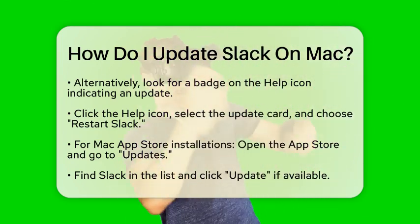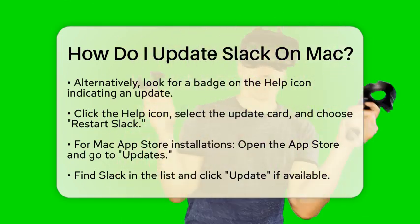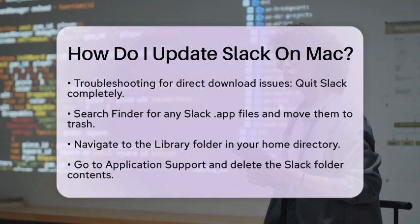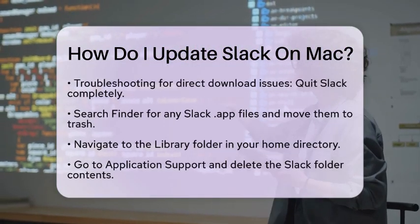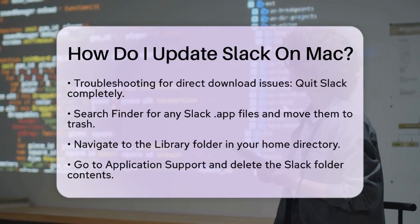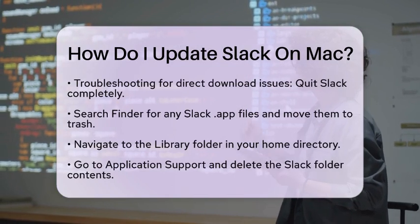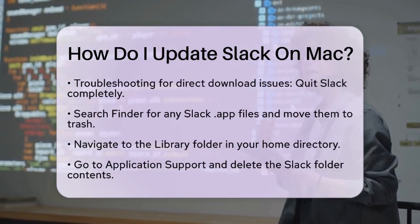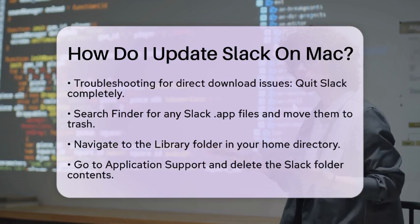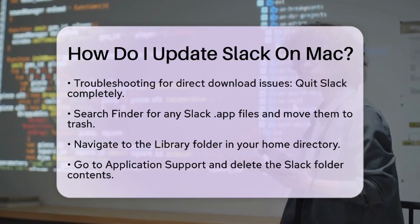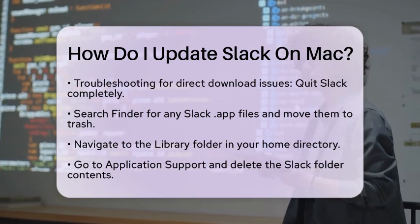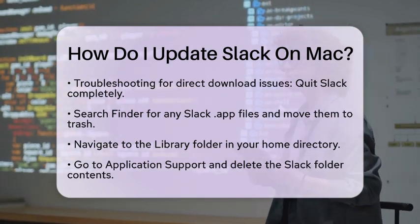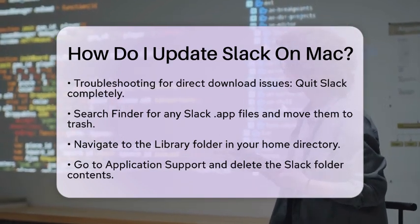Sometimes you might run into issues while updating Slack. If you see error messages or if the app remains on an older version, here are some troubleshooting steps for the direct download version. First, quit Slack completely. Then open Finder and search for any Slack applications, which will have the app file extension. Move those files to the trash.